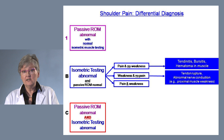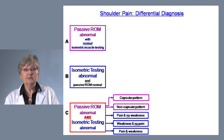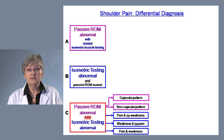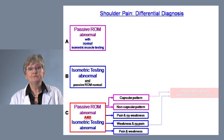Pain and weakness on isometric testing is more ominous. In the third group — passive range of motion abnormal and isometric testing also abnormal — we must again separate findings into capsular or non-capsular pattern, and the isometric testing into pain and no weakness, weakness and no pain, or pain and weakness.